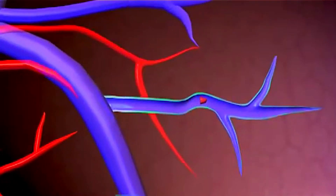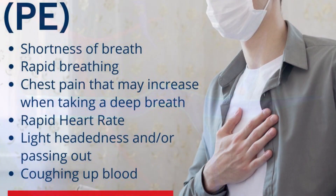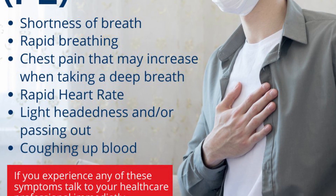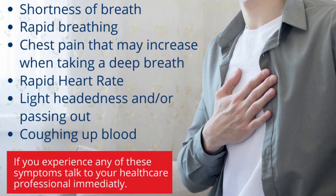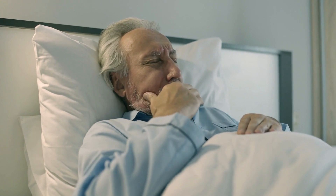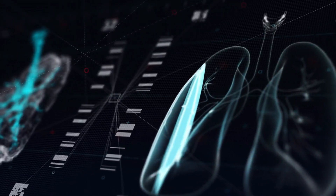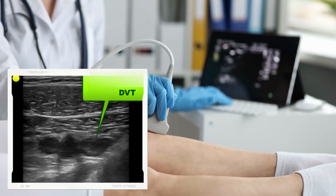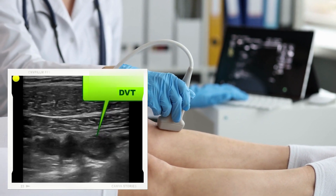Once a blood clot blocks the lungs, there will be difficulty breathing, chest pain, and coughing. If you suspect deep vein thrombosis, you need to seek urgent medical attention. Your main role is to recognize the signs and symptoms of a suspected deep vein thrombosis and seek immediate medical help. To confirm deep vein thrombosis, an ultrasound will be used to create pictures of how the blood flows through the veins.